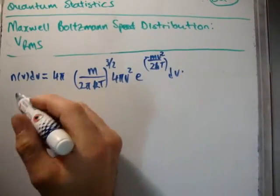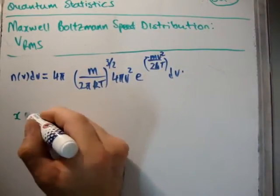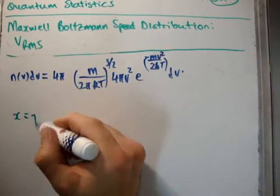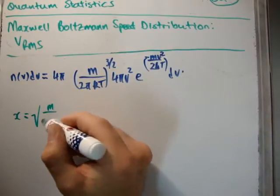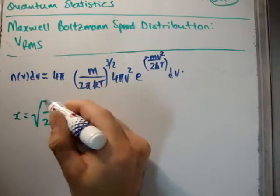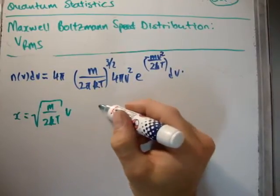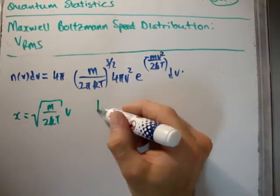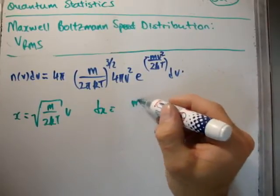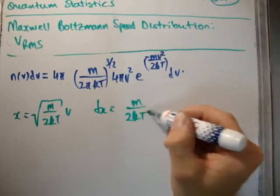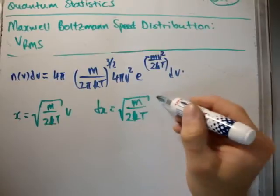So the integral, in order to do this, we need to do a substitution, just like we did in the previous. This time it's going to be x equals square root of m over 2kT times V. We know that as a result then we're going to have dx is equal to square root of m over 2kT dV.